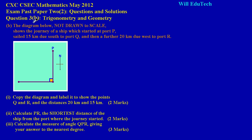In this lesson we'll be looking at question 3b, a typical trigonometry and geometry question on the May 2012 paper. Part B states that the diagram below, not drawn to scale, shows the journey of a ship which started at port P, sailed 15 kilometers due south to port Q, and then a further 20 kilometers due west to port R. A compass is provided to assist in answering the question.